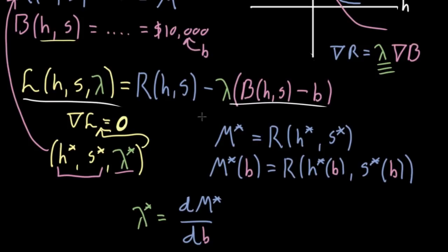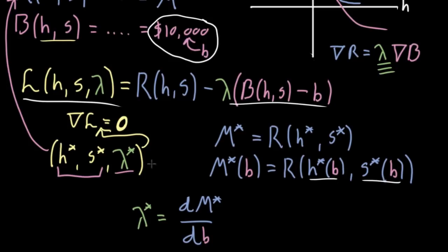The way to start writing this in formulas is to make explicit the fact that if you consider the $10,000 budget — which I'm calling b — a variable and not a constant, then you have to acknowledge that h* and s* are dependent on b. It's a very implicit relationship: as you change b, it changes the Lagrangian, which changes where its gradient equals zero, which changes what h*, s*, and lambda* are. But in principle, they are some function of that budget b.